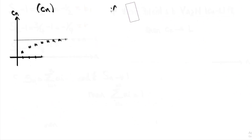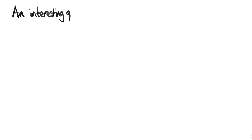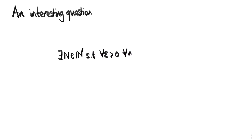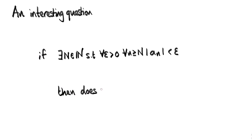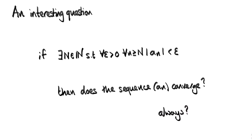I want to leave you with a question. If we slightly modify our condition for convergence so that it now reads: there exists an N member of the whole numbers, such that for all epsilon greater than zero and for all little n greater than big N, the modulus of aₙ is less than epsilon — then what do you think this means in terms of convergence? Does a sequence that obeys this condition converge? Are there any sequences that obey this condition that don't converge? I think this illustrates the requirement for preciseness in writing things down mathematically. If you have any questions, please ask them in the comments below.